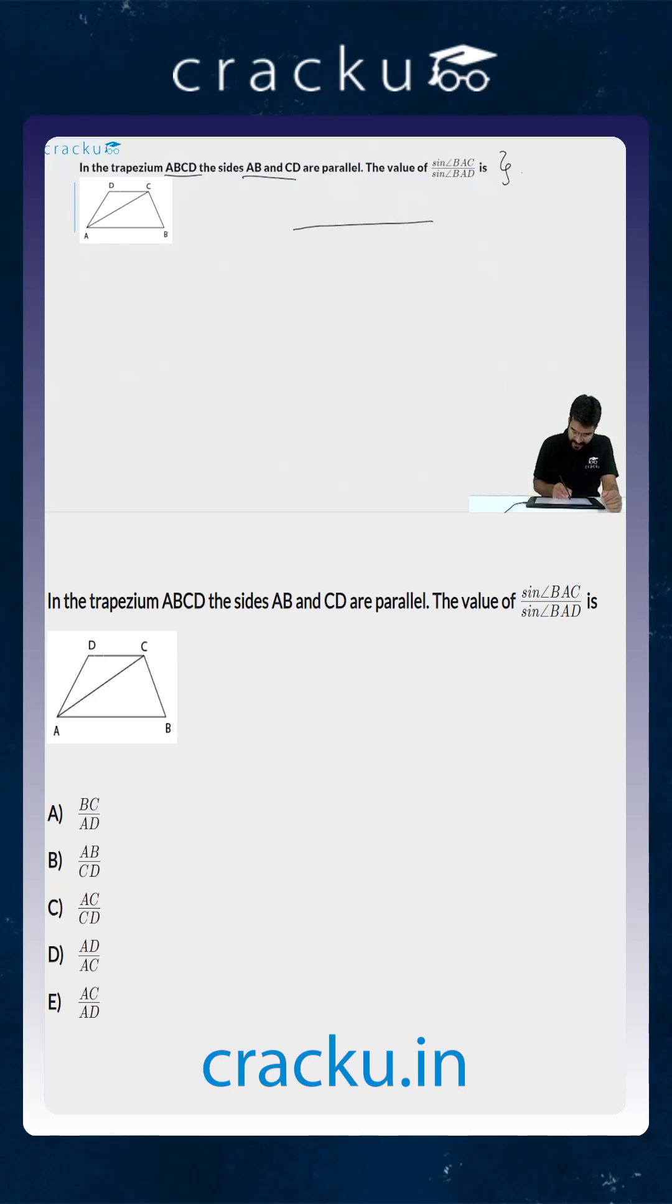So let us draw the trapezium slightly bigger so that we have a better idea of what it is. So this is A, D, C and B. We are told that these two lines are parallel to each other and the diagonal is also drawn. So we are required to find out the ratio of sin BAC to that of the larger angle sin BAD.